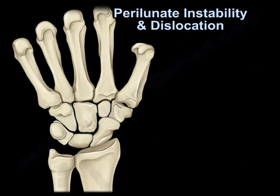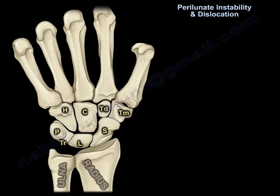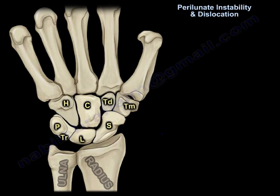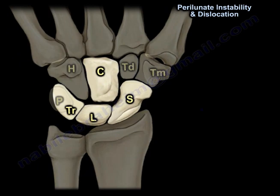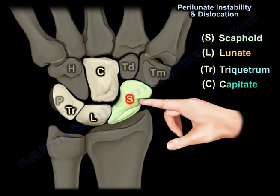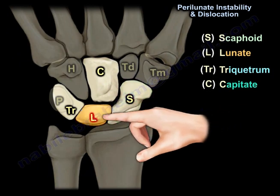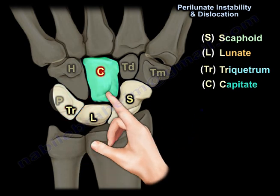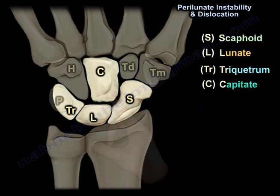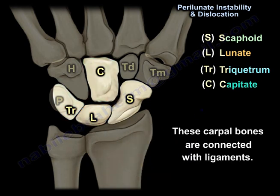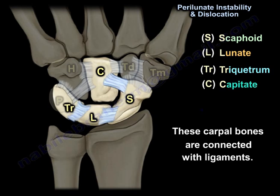Perilunate Instability and Dislocation. Here is the arrangement of the scaphoid, lunate, triquetrum, and capitate. These carpal bones are connected with ligaments.